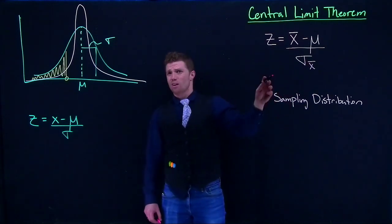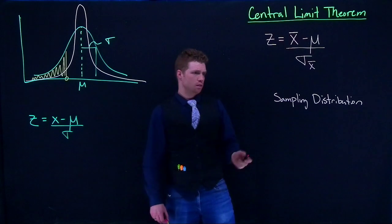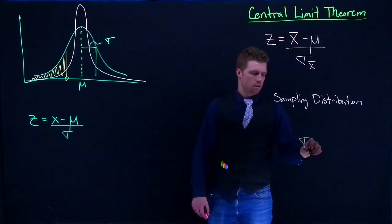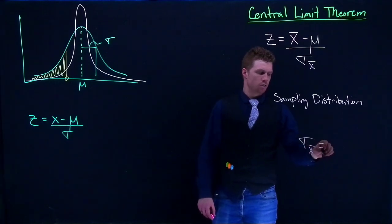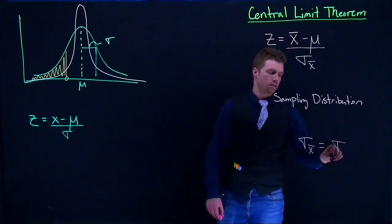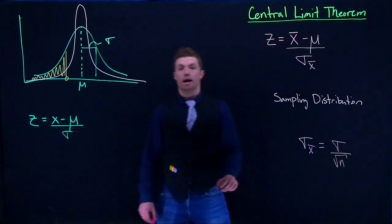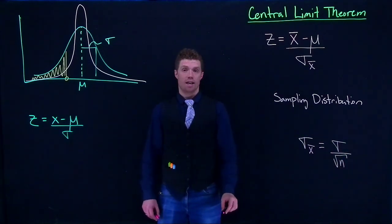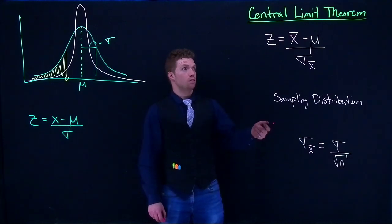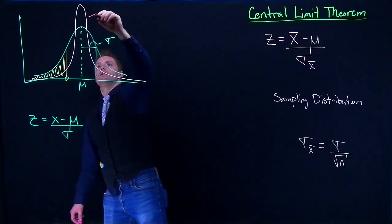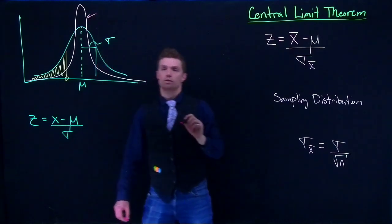So we have to know how to calculate out that sigma value. And we would take sigma x bar is just equal to the original standard deviation divided by the square root of n. And that will give us our new equation for this guy for our central limit theorem.